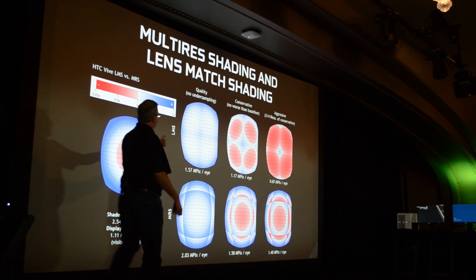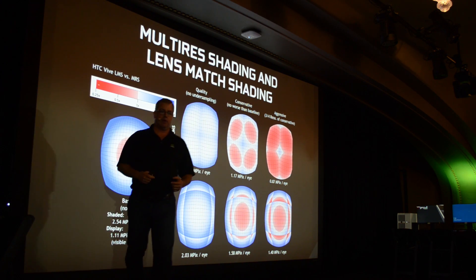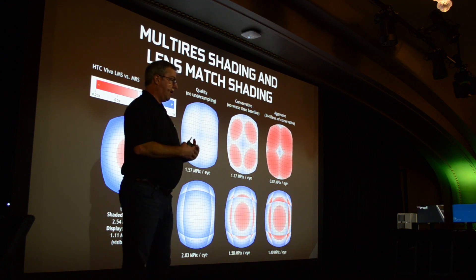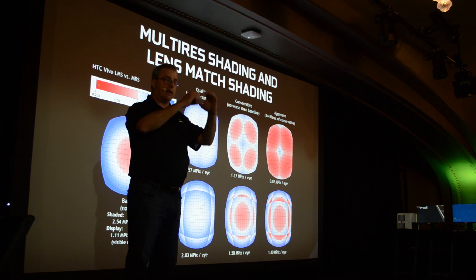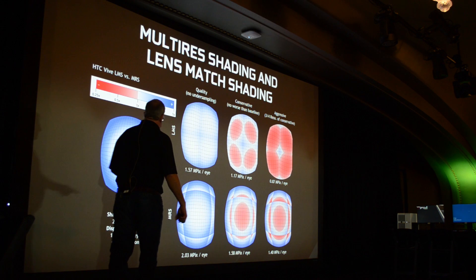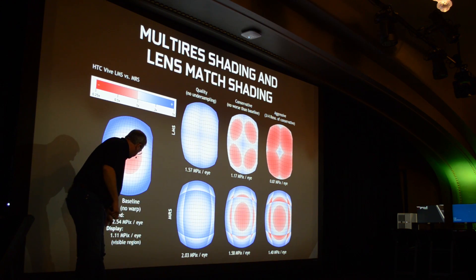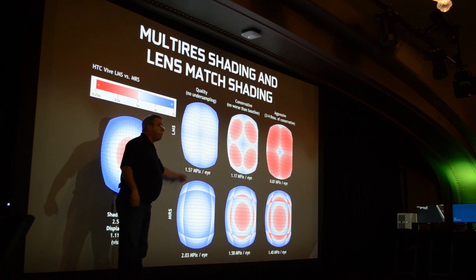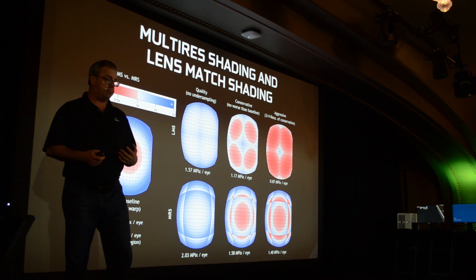This has no red, which means not only is it faster, but the image quality we're generating is actually better, with a denser sample grid in the center where you're looking. So let's do some quick math: we went from around 2.4 megapixels per eye down to about 1.57 megapixels per eye, and the quality got better.